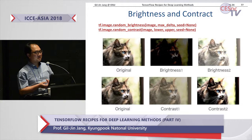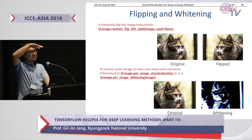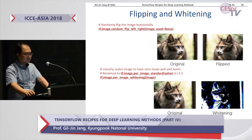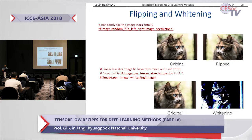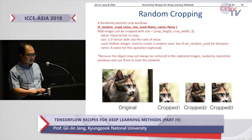There is also flipping or rotation, and whitening. Whitening means flattening the luminance or brightness depending on the histogram of the image colors. There is a function — it used to be tf.image.per_image_whitening, but it was renamed from TensorFlow 1.5 as tf.image.per_image_standardization. So some method names have changed. Flipping and whitening are important augmentation operations.